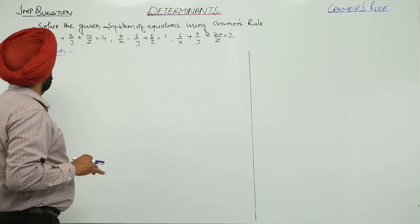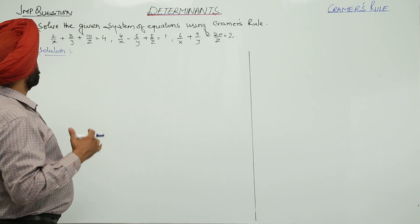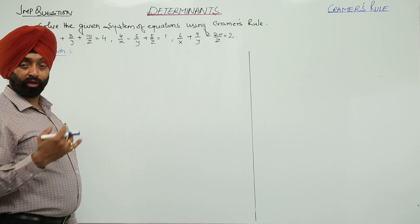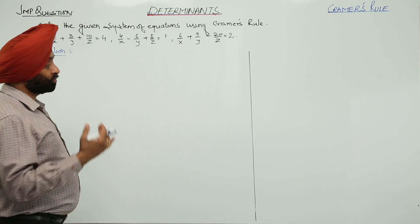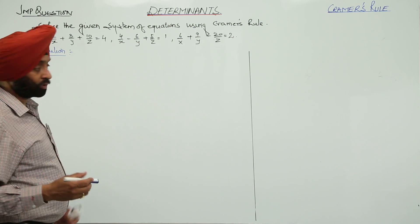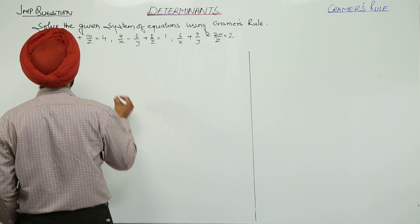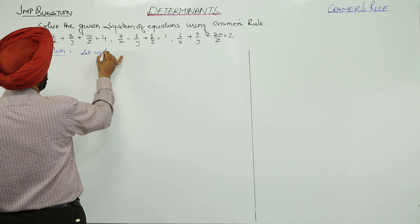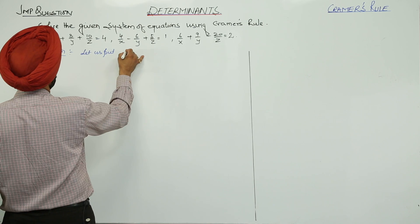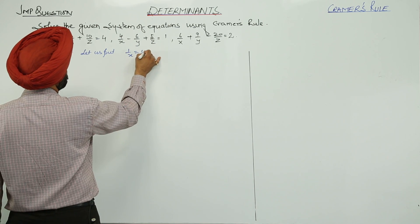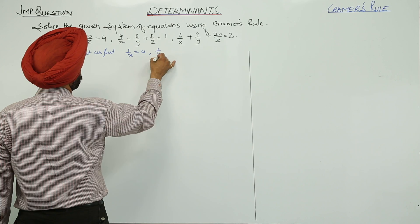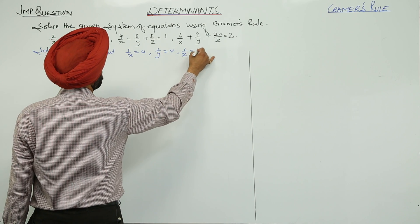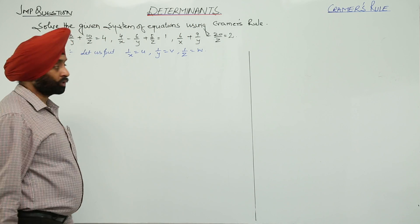Now in this question, we are given the equation as 2 upon x. We can write it as 2 times 1 upon x, 3 times 1 upon y, 10 times 1 upon z like this one. So first of all, let's convert it. Let us put 1 upon x is equal to u, 1 upon y is v, and 1 upon z is equal to w.